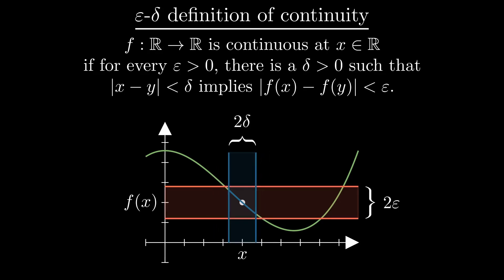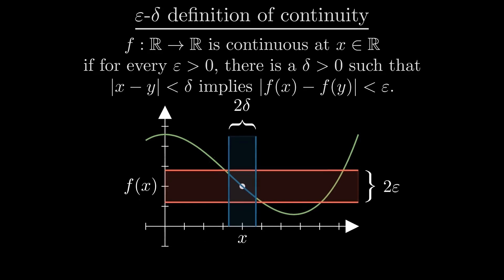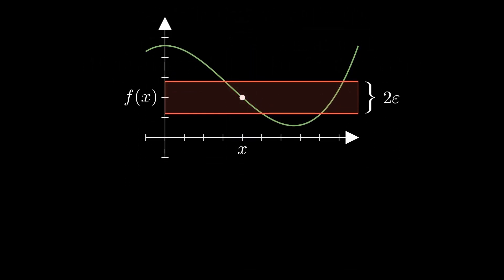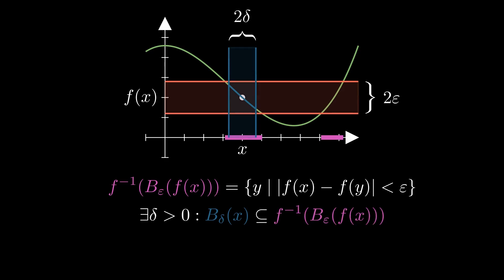Instead of always having to find such delta, we can take a different approach. We can consider the pre-image of the epsilon ball around f of x, then f is continuous at x if this pre-image contains a delta ball around x.